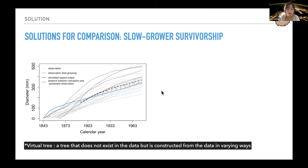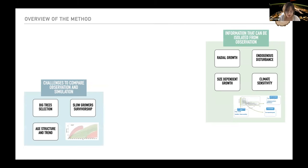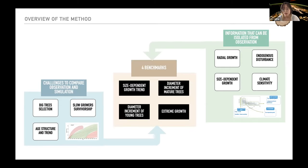We call this compiled one time series as a virtual tree. That is the tree that does not exist in the data, but is constructed from the data in varying ways. The second solution can be summarized as compile a virtual tree using observed tree ring width. So I introduced first information that can be isolated from observation. Then I introduced challenges to compare observation and simulation, which are big tree selection bias, slow grower survivorship, and the difference in age structure and trend.